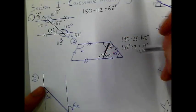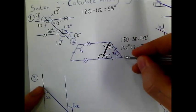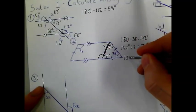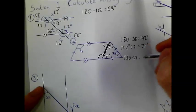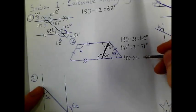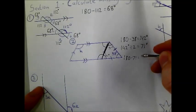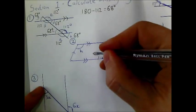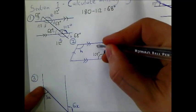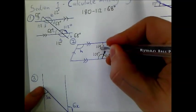These need to add up to 180, so 180 take away 71 is going to be 109. So these are both 109 degrees.